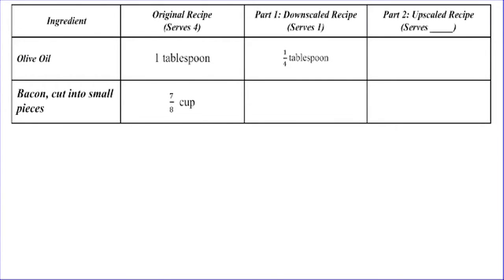In this video, we're going to look at how to work with our recipes in the pasta perfection assignment. The two main things we need to do is first take our original recipe, which serves four, and downscale it so that it serves only one person. Then we're going to take that one serving and upscale it to serve a certain number of people — in this case, 20 people — figuring out how much of each ingredient you need if 20 people ordered spaghetti carbonara at your restaurant.